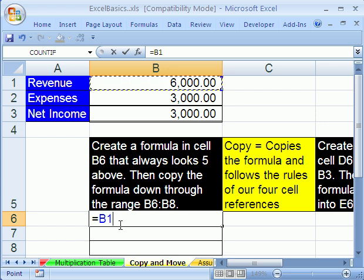That formula is not B1. Excel doesn't see it that way. Because we're going to copy the formula, it's relative. It means if I'm the formula, where am I always going to look? 1, 2, 3, 4, 5 above.